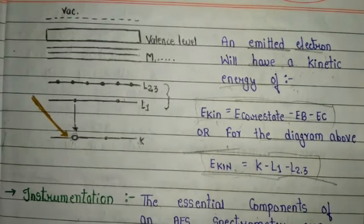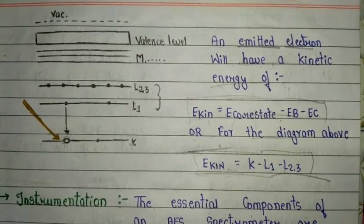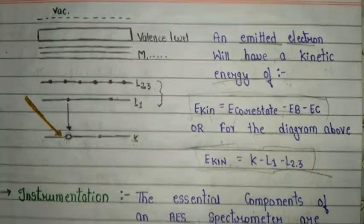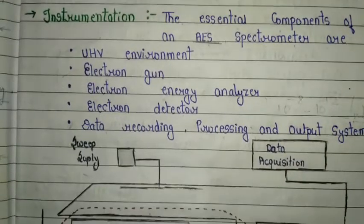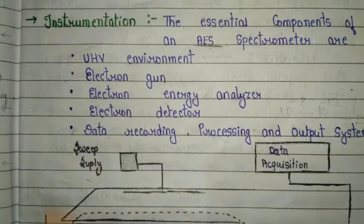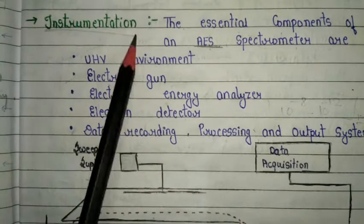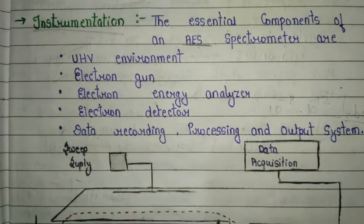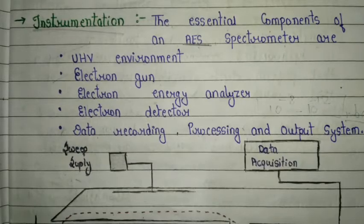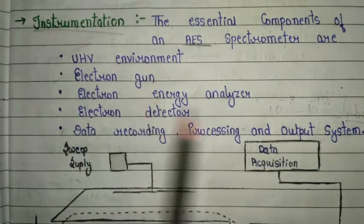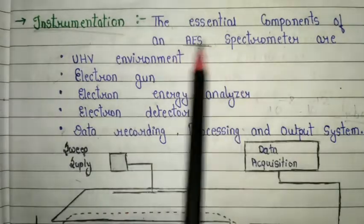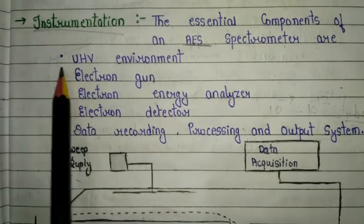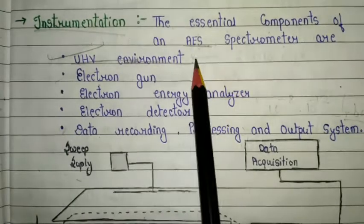Now we are going to discuss the instrumentation. When discussing instrumentation of this process, we have to know the essential components. The detailed process of instrumentation is not very important; we only need to know the essential components of the AES spectrometer.